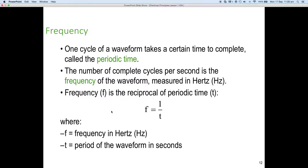Once we have the period we don't normally talk about the period of the wave all that often. We normally describe the period using the word frequency. So let's have a look at what is frequency. One cycle of a waveform takes a certain time to complete and we call this the periodic time. The number of complete cycles per second is called the frequency of the waveform, is measured in hertz, and named after Heinrich Hertz who is a German physicist.